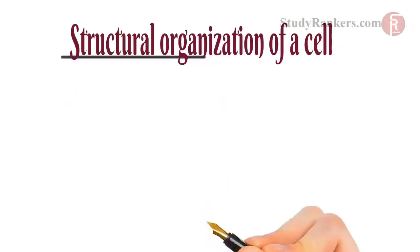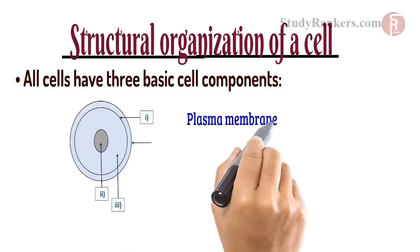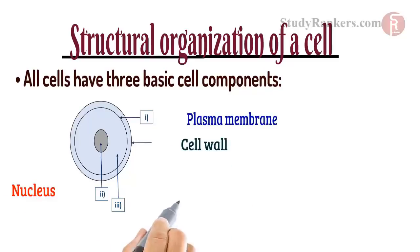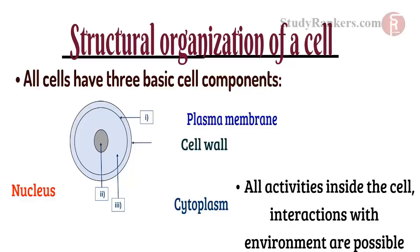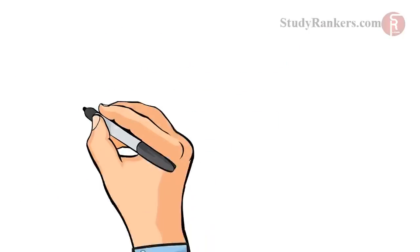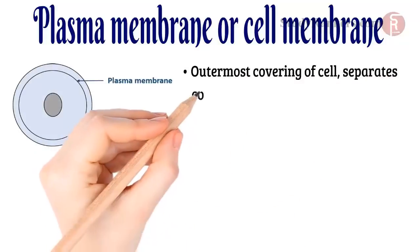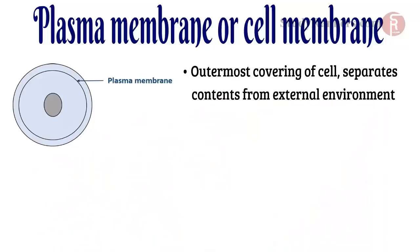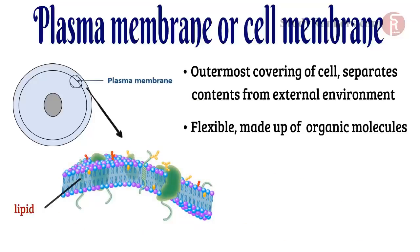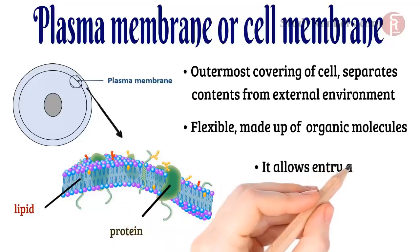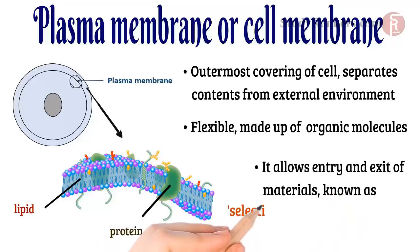The structural organization of a cell. Basically, all cells have three basic components: plasma membrane, nucleus, and cytoplasm. All activities inside the cell and interactions of the cell with its environment are possible due to these features. The plasma membrane, or cell membrane, is the outermost covering of the cell that separates the contents of the cell from its external environment. It is flexible and is made up of organic molecules called lipids and proteins. It allows the entry and exit of some materials in and out of the cell, so the cell membrane is called a selectively permeable membrane.